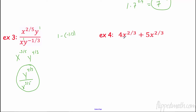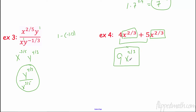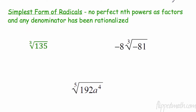Over here I'm adding, and you can see I have like terms — the same variable to the same exponent. So I'm going to add the coefficients: four plus five is nine, giving me 9x to the two thirds. Nothing changes with my variable and my exponent. A lot of you want to add the two thirds — remember, you only add exponents when you are multiplying.